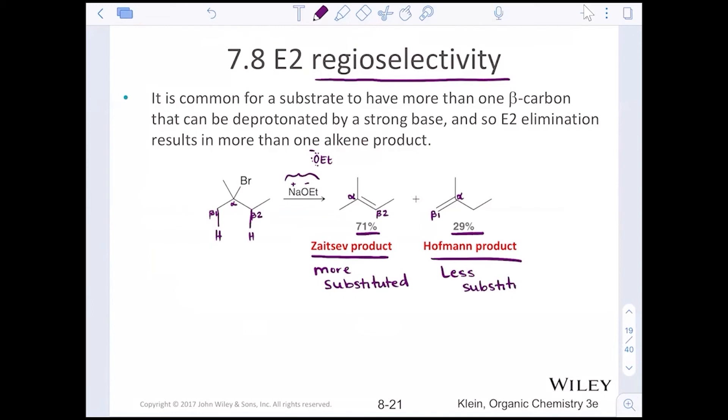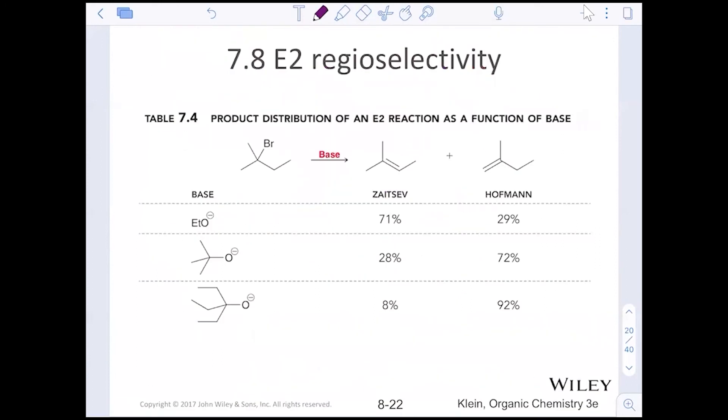The size of your base will determine which one is higher in concentration. So for this example, because the size of ethoxide is relatively small, the Zaitsev product is in higher quantity. It is the major product. I really like this chart from our textbook because it's looking at regioselectivity with these values and numeric values.